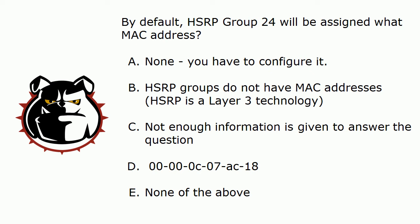By default, HSRP Group 24 is going to be assigned what MAC address? A: None — you've got to configure it. B: HSRP Groups don't have MAC addresses because they run at Layer 3. C: Not enough information is given to answer the question. D: 0000.0C07.AC18. E: None of the above.